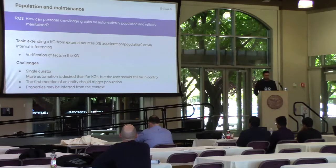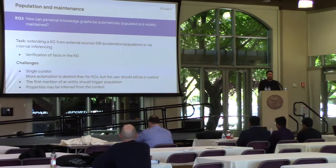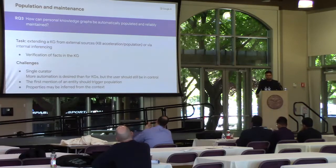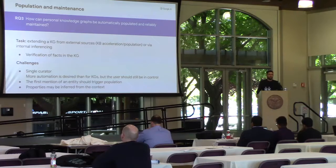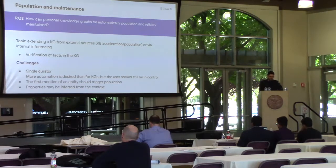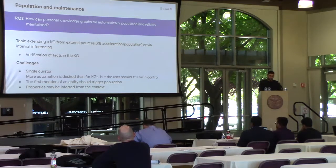The next topic is population and maintenance. Knowledge graphs are incomplete and need to be updated. This can happen from external sources or via inferencing. Commonly there is a group of people who share this responsibility, like knowledge editors. In the case of a personal knowledge graph, there is a single curator — everything has to go through the user — which means that ideally a higher level of automation would be desired. This is also related to entity linking: whenever an entity is mentioned for the first time, we might want to trigger the population of the personal knowledge graph with that entity.